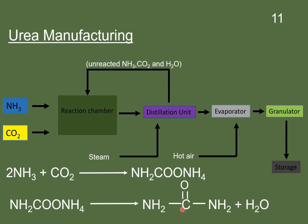The formula of urea is NH2COONH2. The unreacted ammonia, carbon dioxide, and water are recycled back into the reaction chamber. This liquid urea is then fed into the evaporator where it is concentrated, and then fed into the granulator. In the granulator, concentrated urea is converted into granules and then stored.